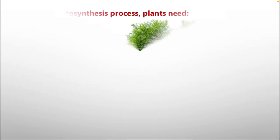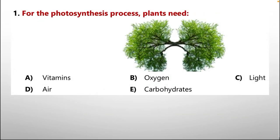Question number one: for the photosynthesis process, plants need — option A: vitamins, B: oxygen, C: light, D: air, E: carbohydrates. We all know that the photosynthesis process works only under one condition, and that is light. Option C is the correct answer.